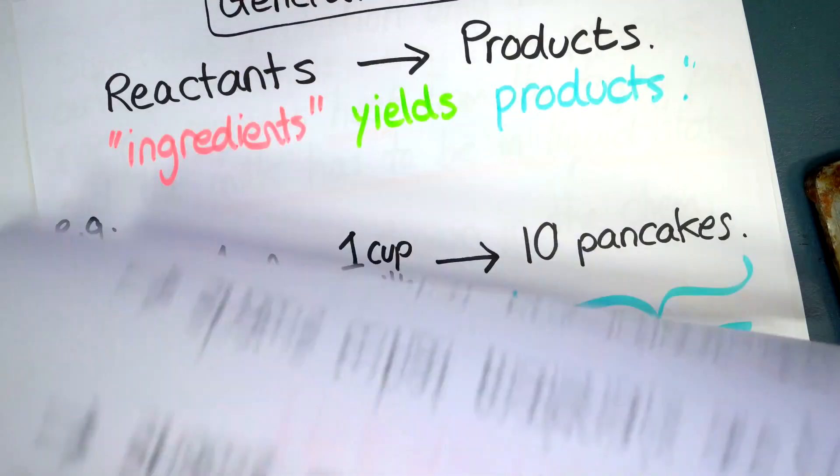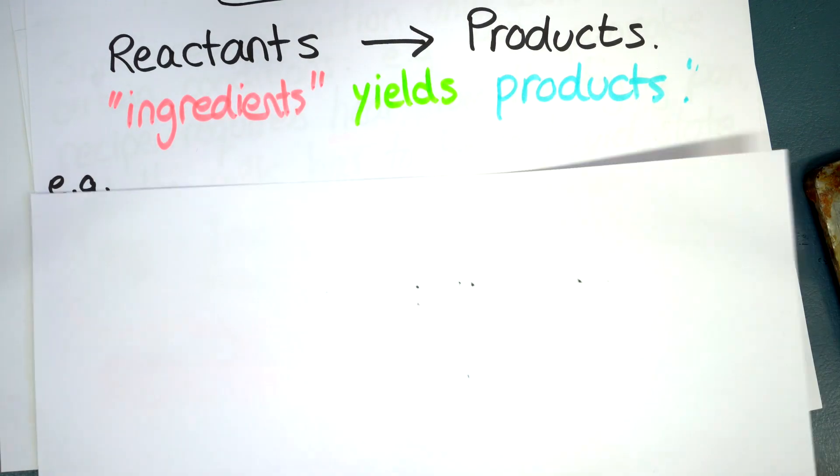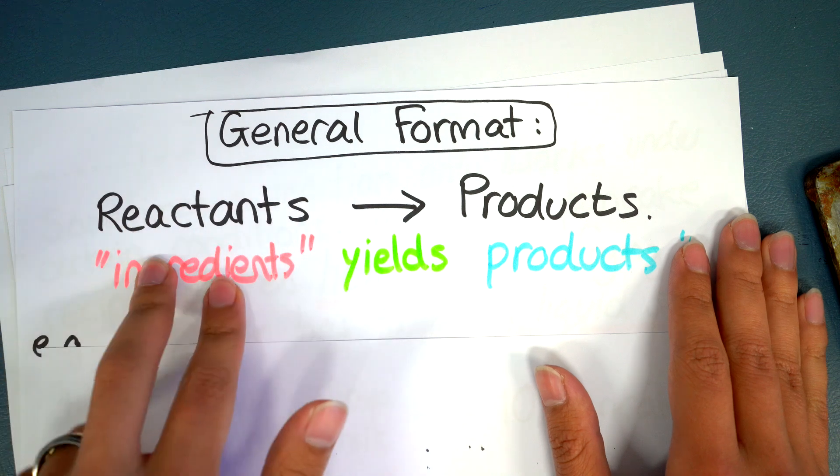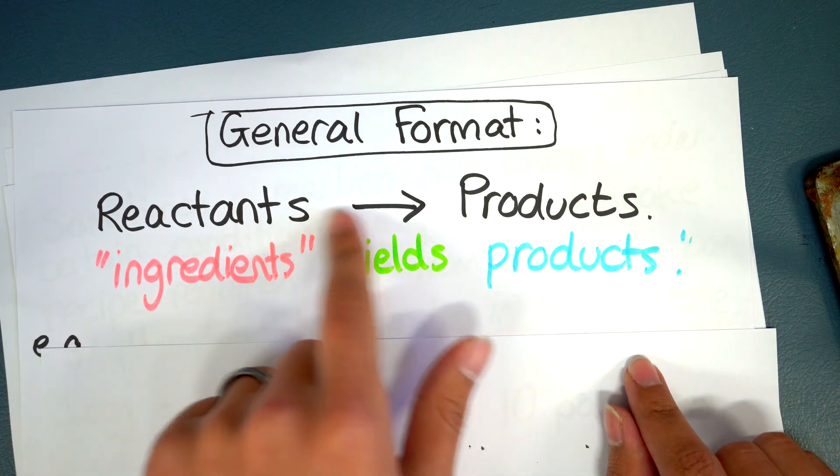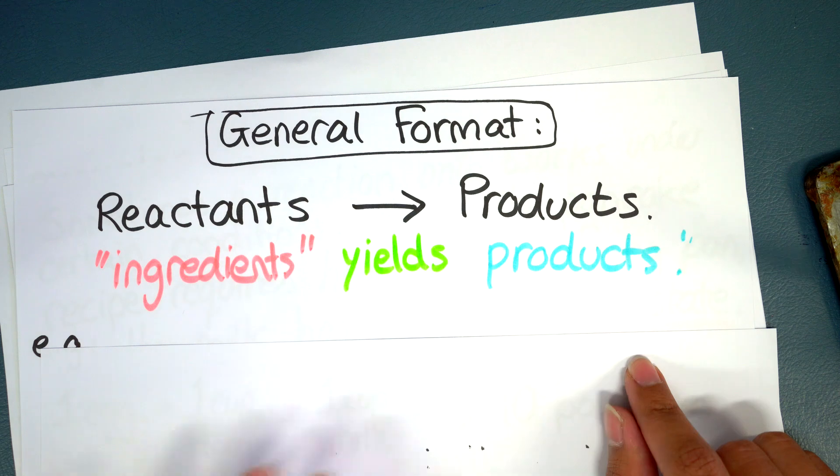So what does this look like? Well the general format is we have typically the reactants or ingredients if you will on the left hand side, then there's an arrow sign and then on the right hand side we've got the products.